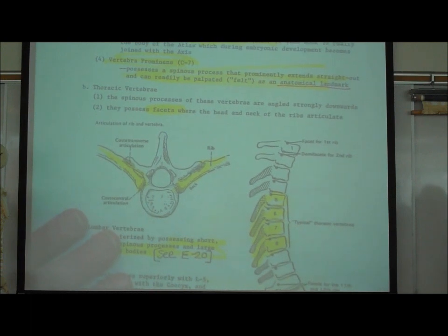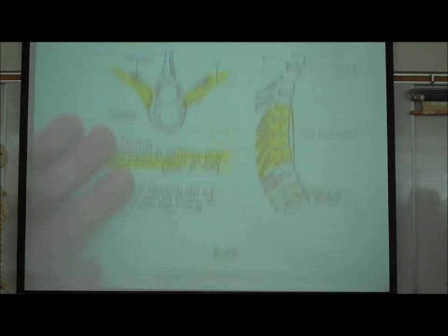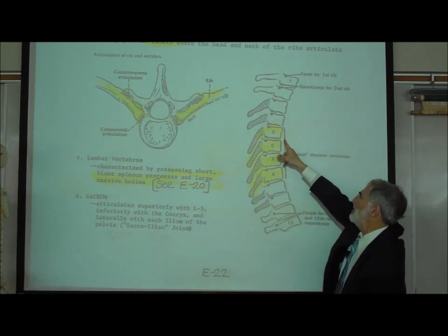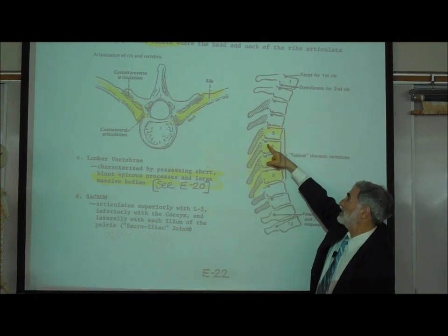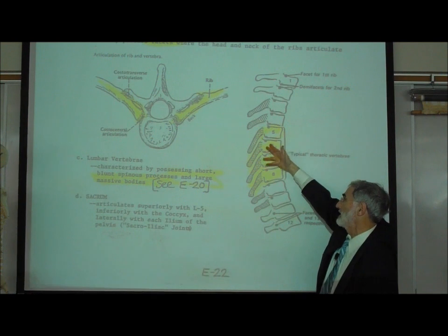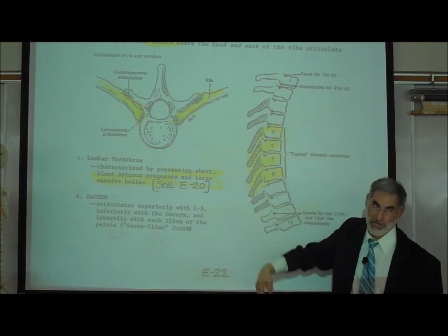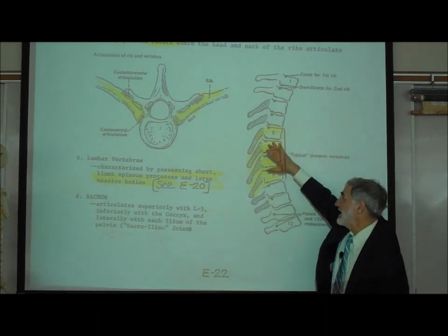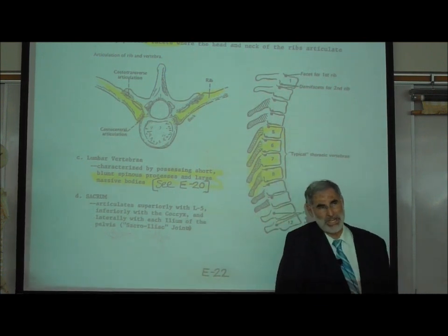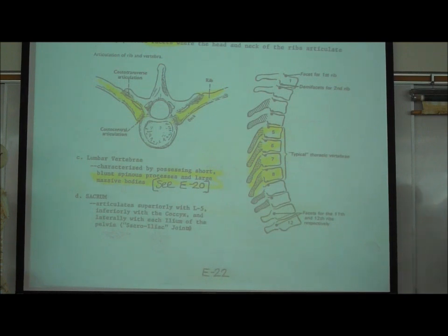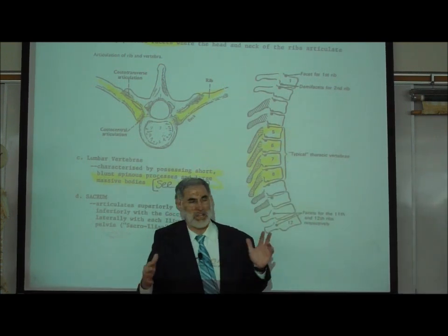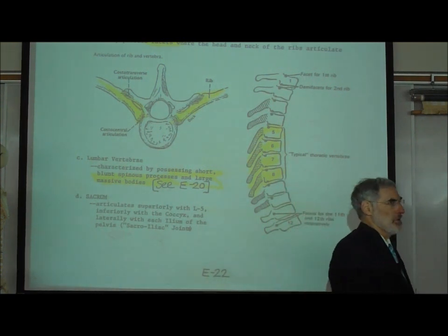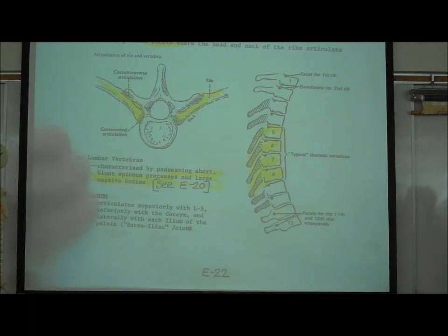Thoracic vertebrae have a couple of identifying characteristics. The easiest to focus on is the spinous process, which tends to be very long and points downward in most thoracic vertebrae. Additionally, thoracic vertebrae have extra facets where the ribs attach. Since there are 12 thoracic vertebrae, there are 12 pairs of ribs — one pair attached to each thoracic vertebra.